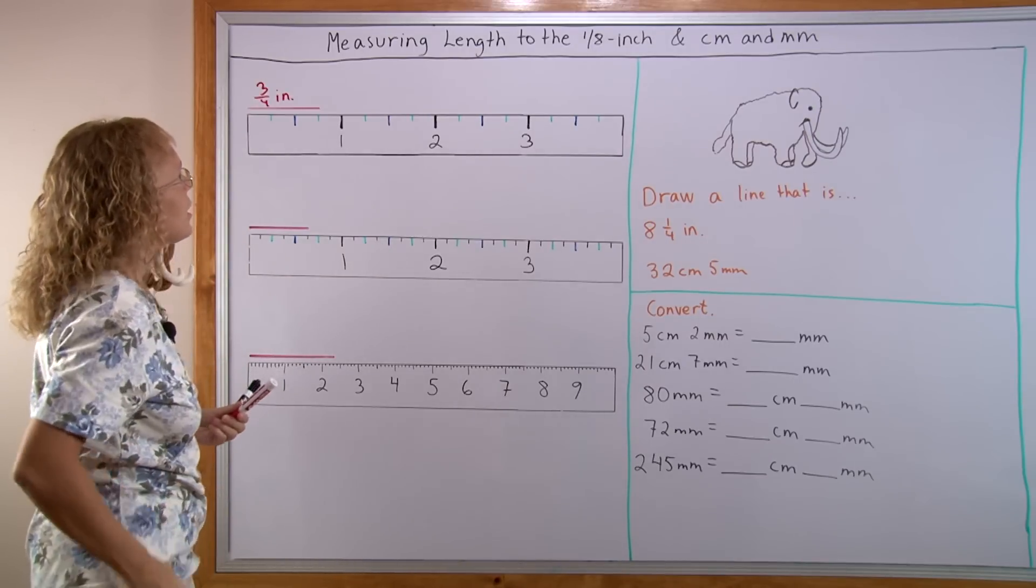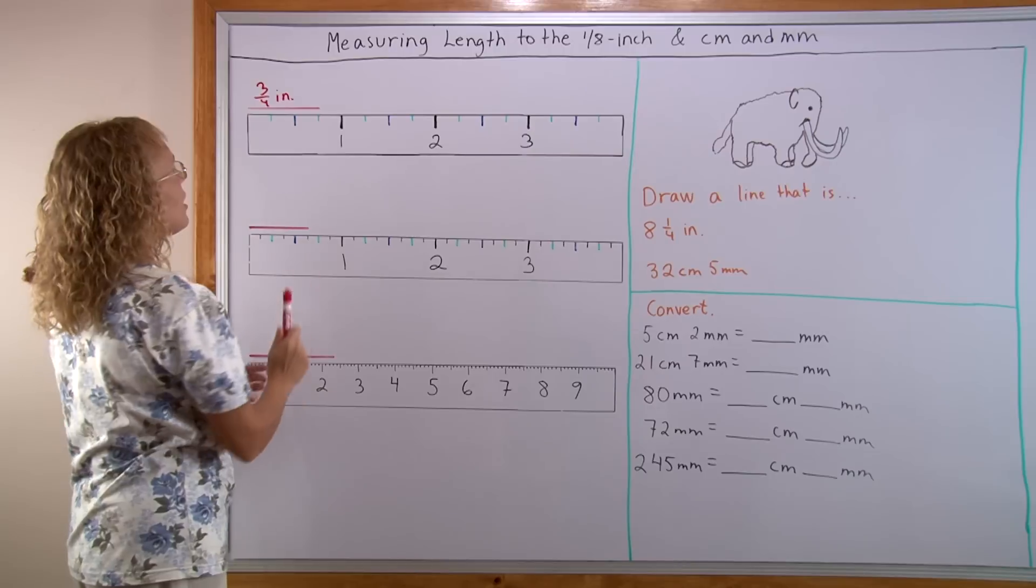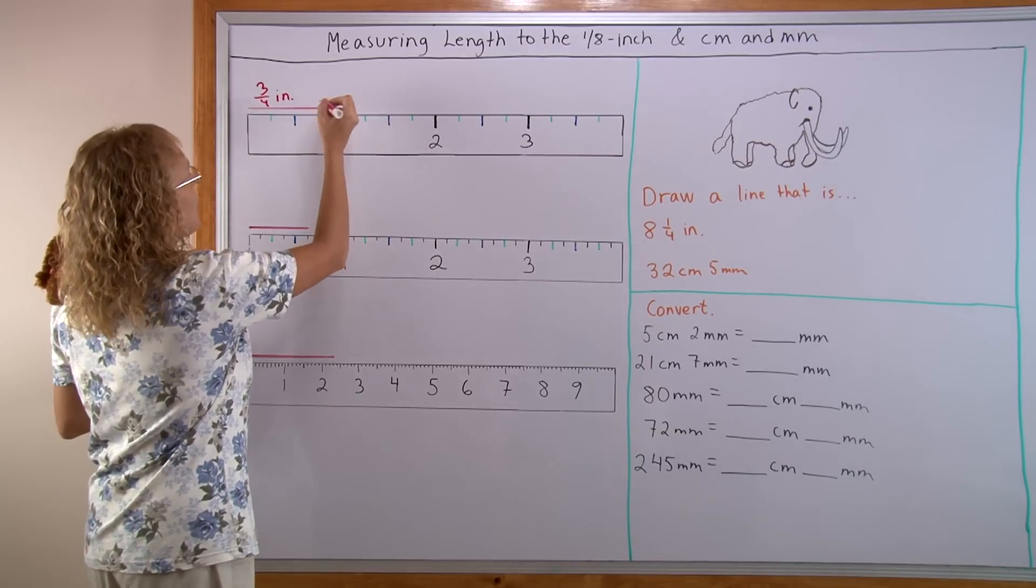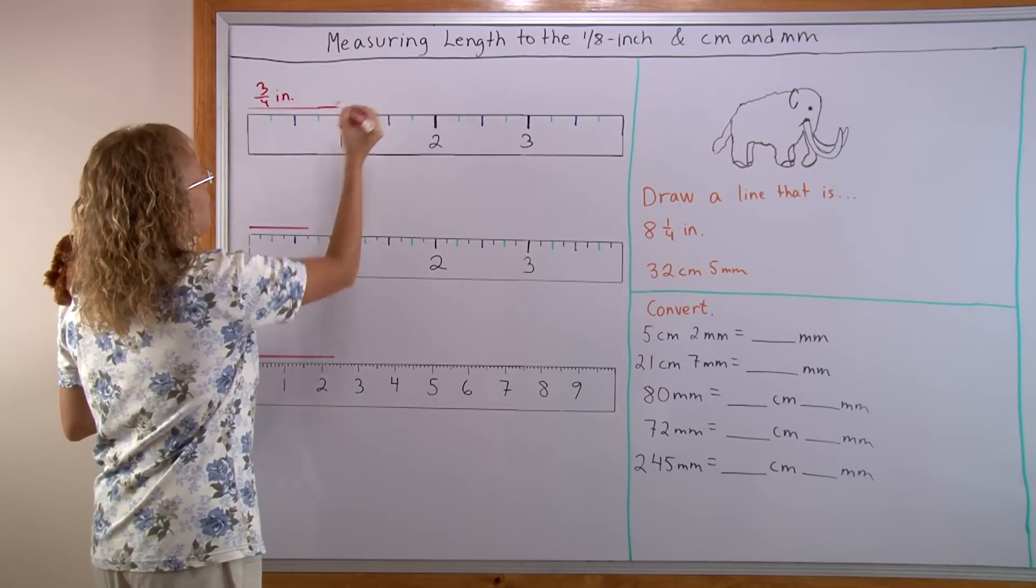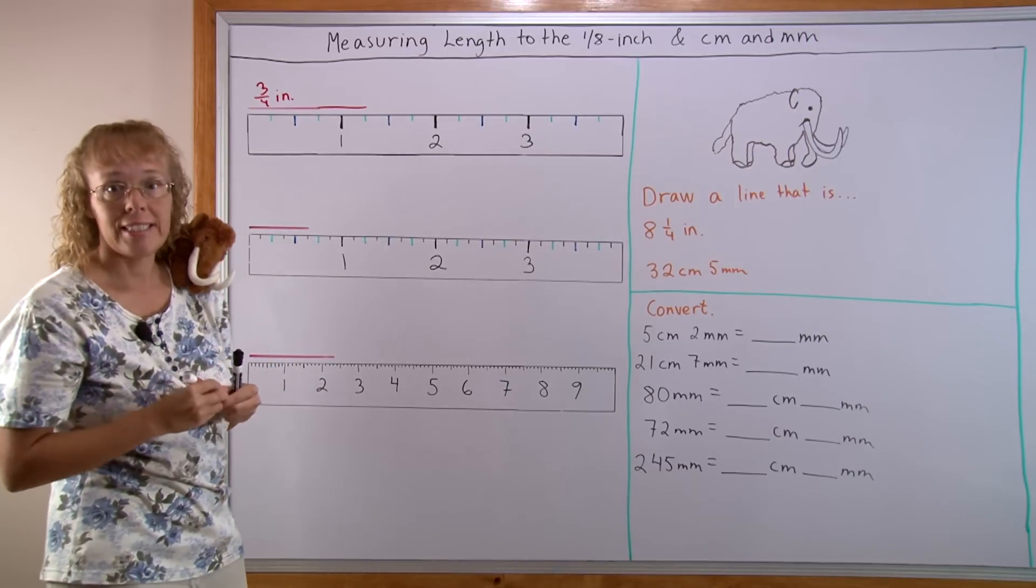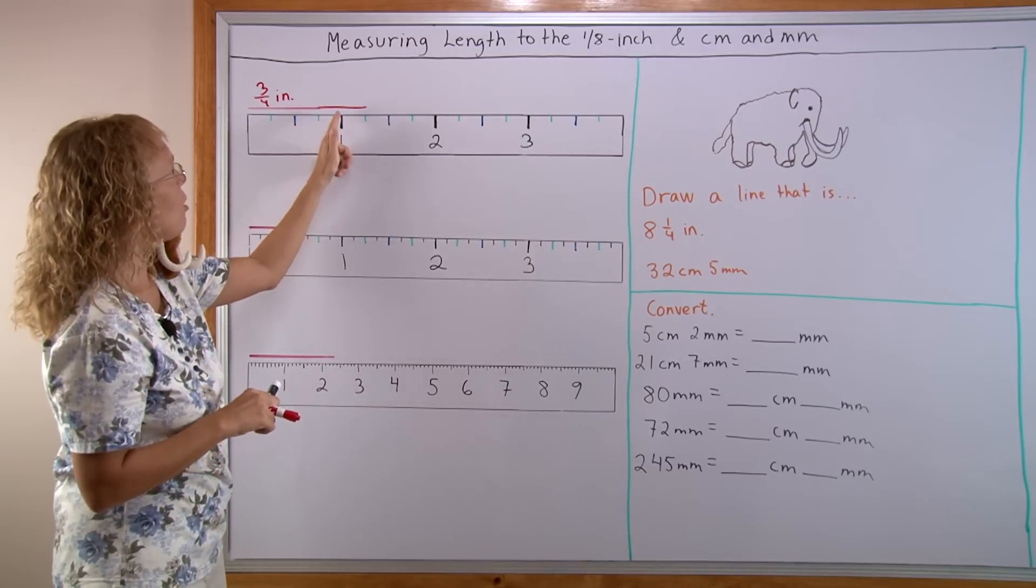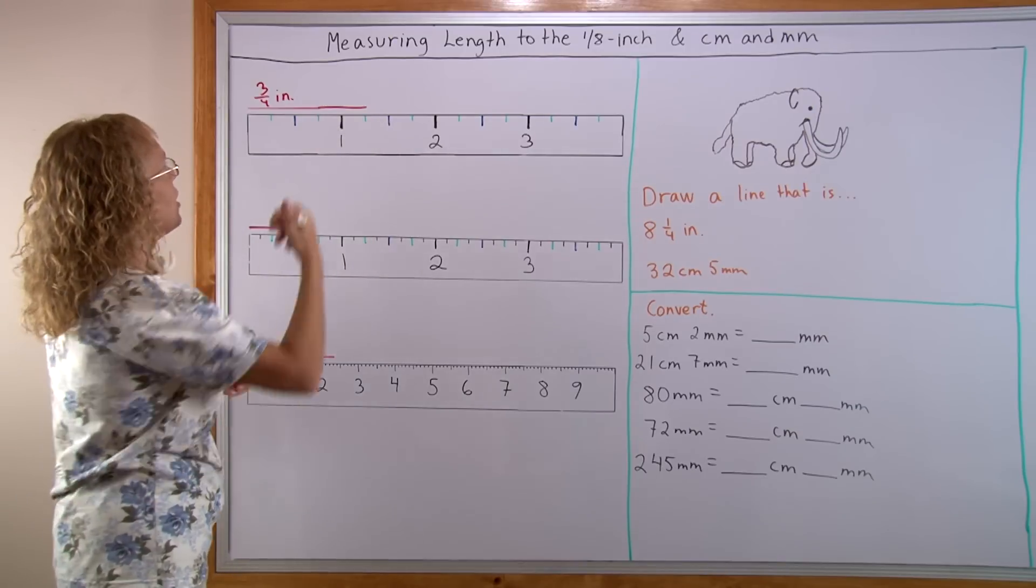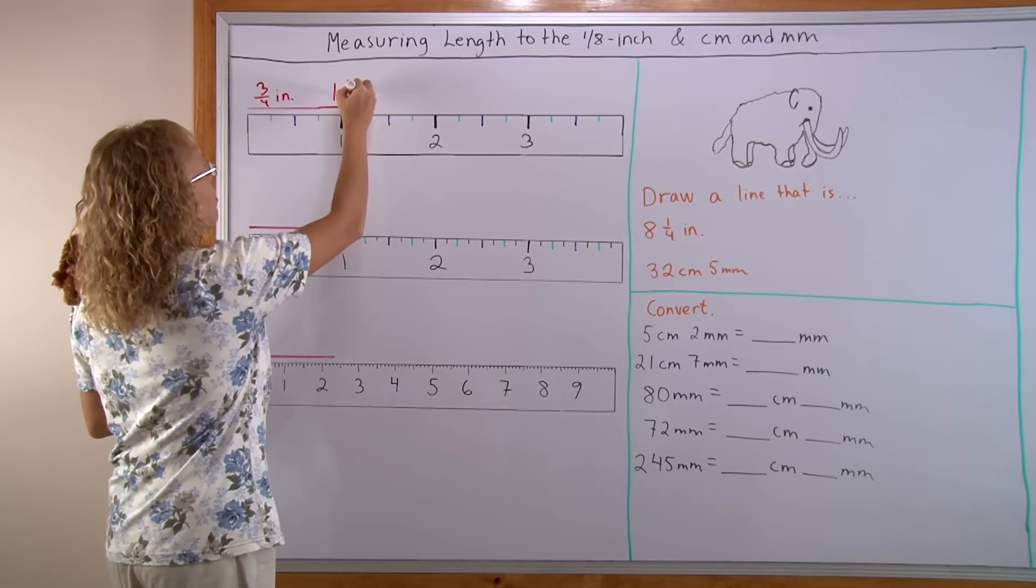Now let us practice a little. I will extend this 3/4 of an inch line a little longer. Let's see I draw up till here. Now how long is it? Can you tell? There's one whole inch up till here and then 1/4 of an inch. So now it is 1 1/4 inches.